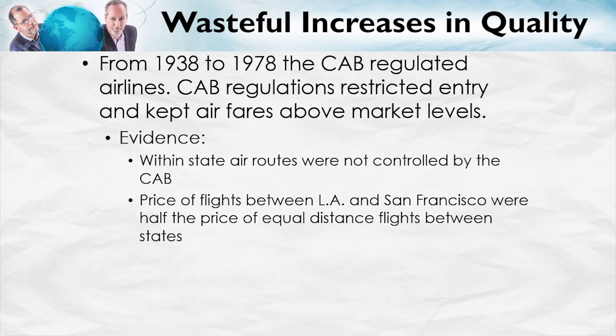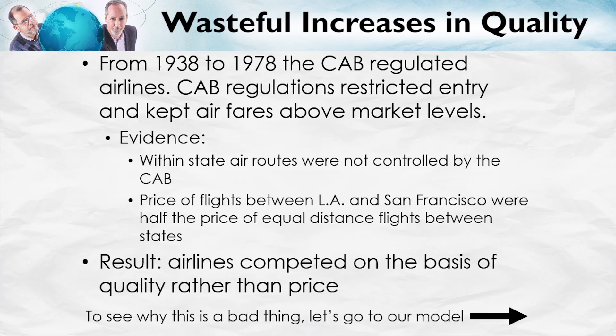Now, you might wonder why they were doing this. In fact, the CAB is a classic example of a regulatory agency which many people argue was captured by the industry that it was meant to regulate. Instead of regulating airlines, it was regulated by the airlines — it was controlled by the airlines. In any case, the result of preventing competition by price was that airlines competed for customers on the basis of quality rather than price.